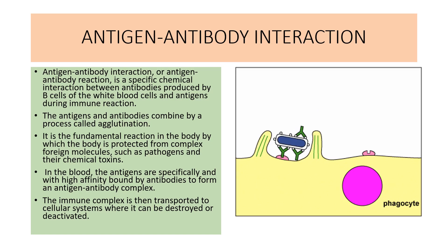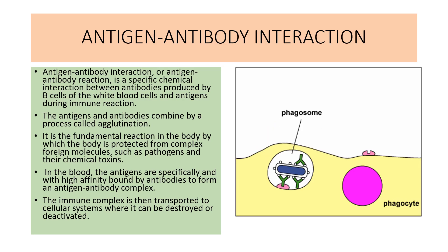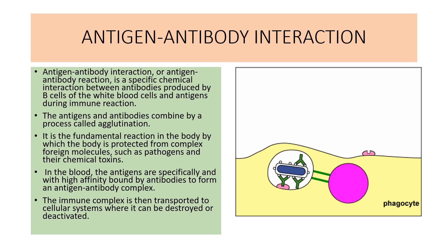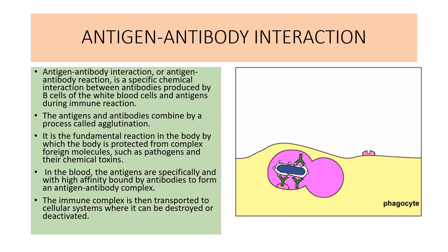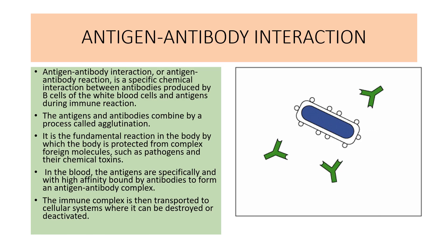In this animation, you can see that there is one antigen — a bacteria — which has the epitopes. This bacteria is attracted by the antibodies. The antibodies have the paratope. There is an interaction between the epitope and the paratope, and the antibodies bind with the epitope and form a complex known as the antigen-antibody complex.